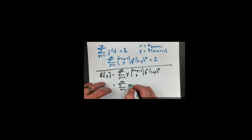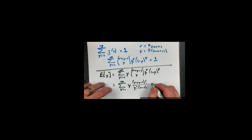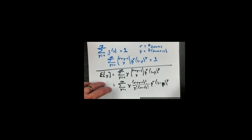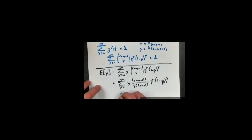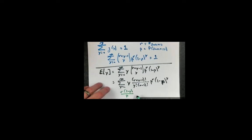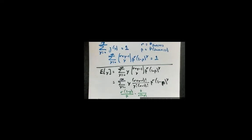Let's write out this expression: this is the sum from y equals 1 to infinity of y times (r plus y minus 1) factorial over y factorial times (r minus 1) factorial, times p to the r times (1 minus p) to the y. The next step is to factor out the expression r times (1 minus p) divided by p. We can do this by multiplying by the inverse of those values — multiplying by 1 — and then doing a little rearranging.